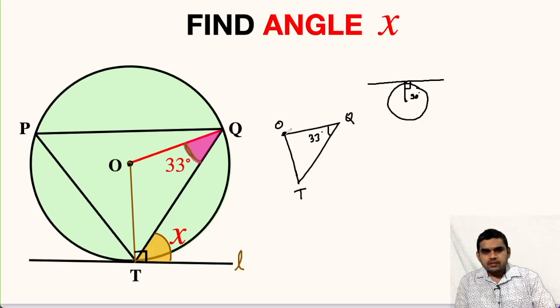Now, we know that O is the center of the circle. So O, Q will be the radius and O, T will also be the radius. So they are equal in length. Hence, this triangle O, Q, T will be an isosceles triangle.